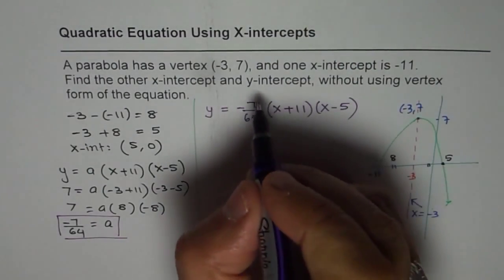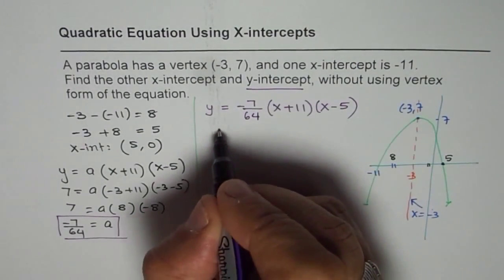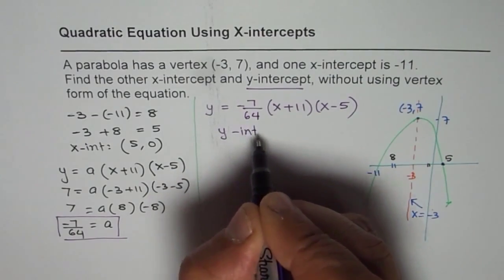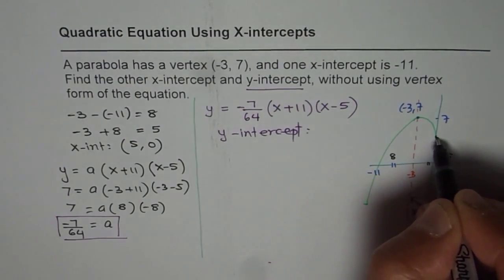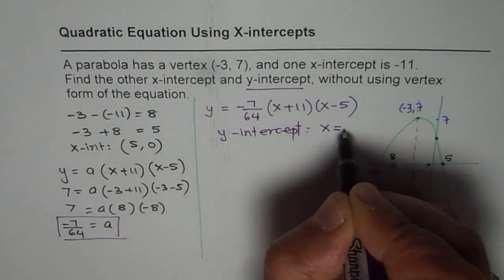So we get our quadratic equation. Now it is easy to find y-intercept. For y-intercept, what should we do? Y-intercept is when x is 0, right? So x equals to 0.